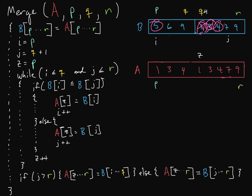Now we're on seven. Is five less than or equal to seven? Yes. So now we say A at C equals B at I, and we copy down five. We need to increment our indices. We're done with five. Got six here — is six less than or equal to seven? Yes it is, so we copy this one down.